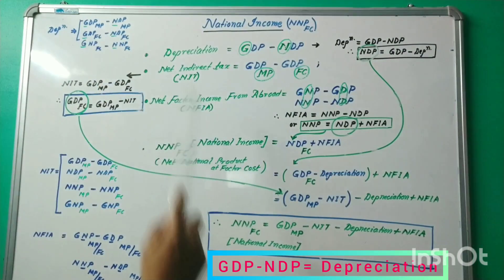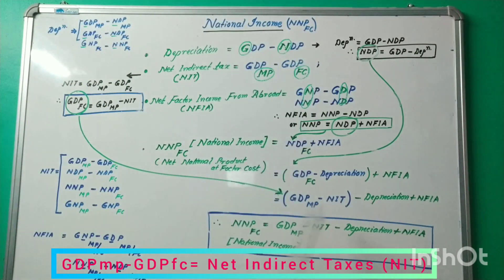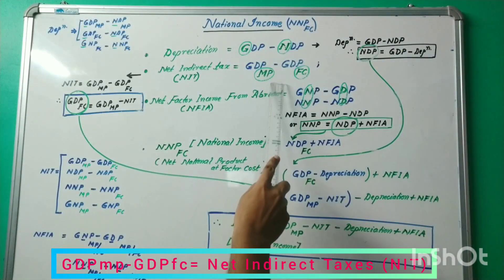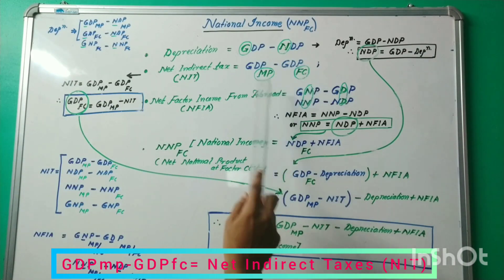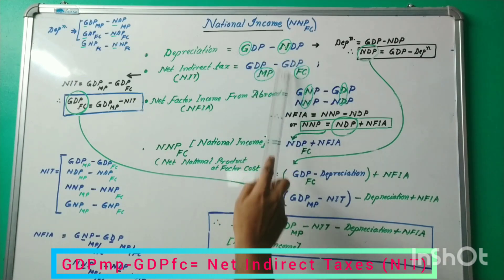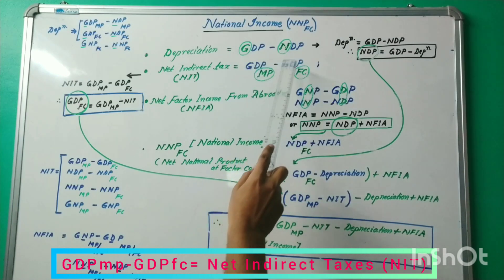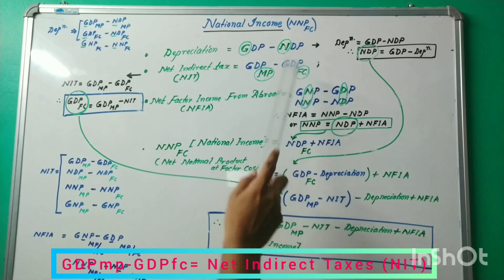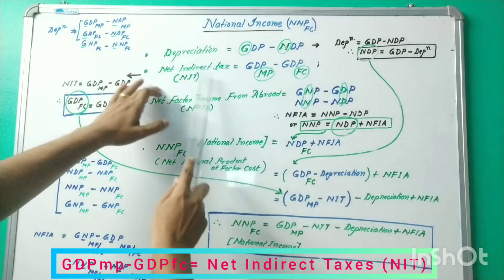Number two: net indirect tax, that is NIT. What I have written: GDPMP minus GDPFC. You just focus on market price minus factor cost is net indirect tax. So market price minus factor cost and other parts remain constant. For example: NDPMP gives NDPFC; NNP market price gives NNP factor cost; GNP market price gives GNP factor cost. Market price minus factor cost is net indirect tax.